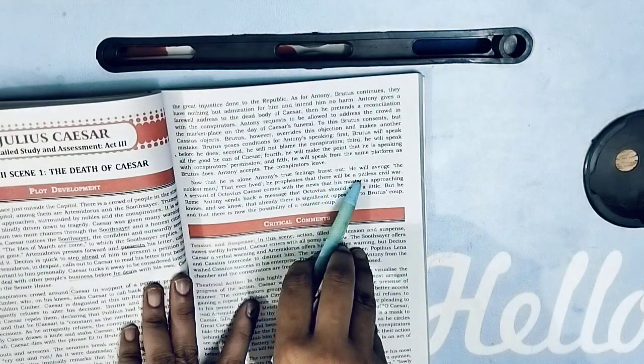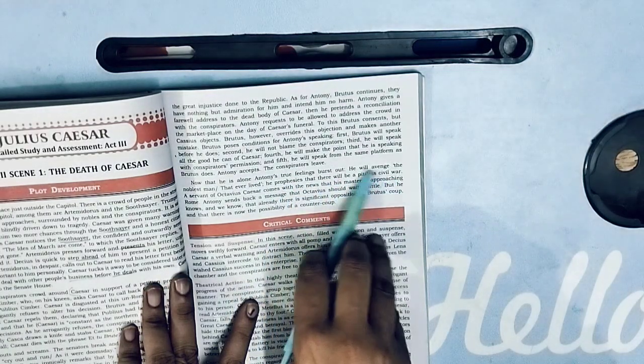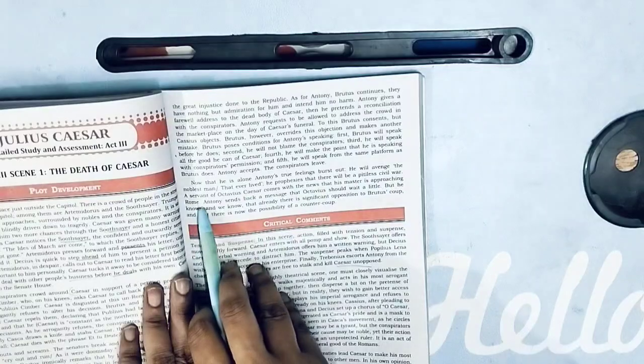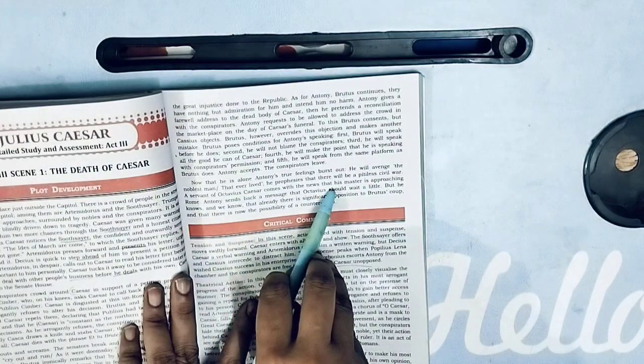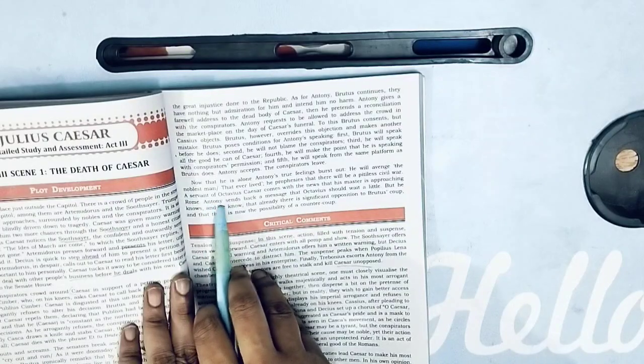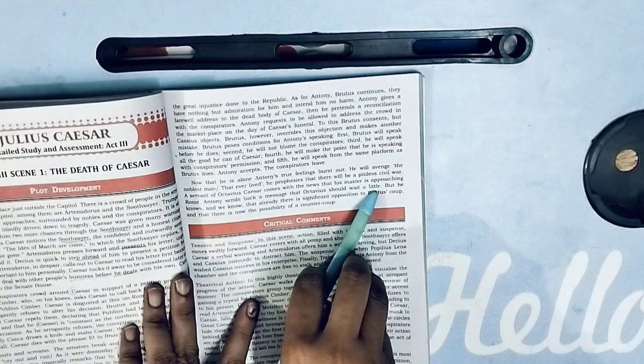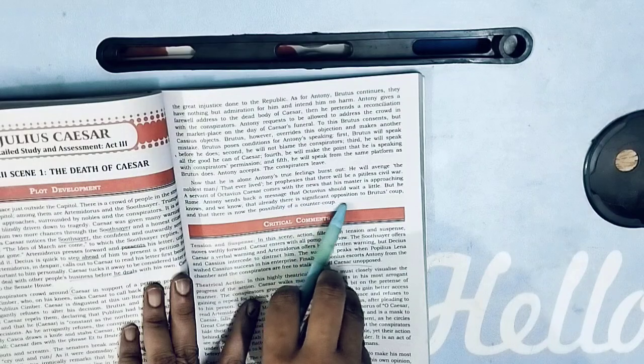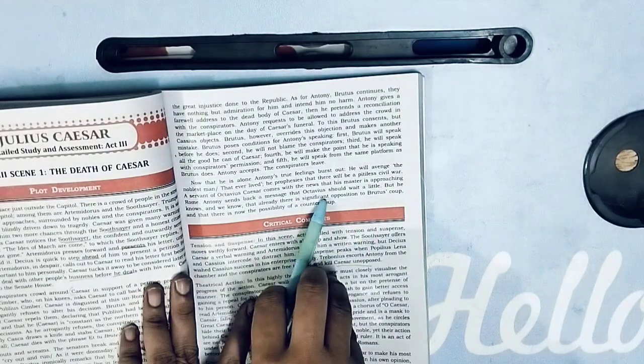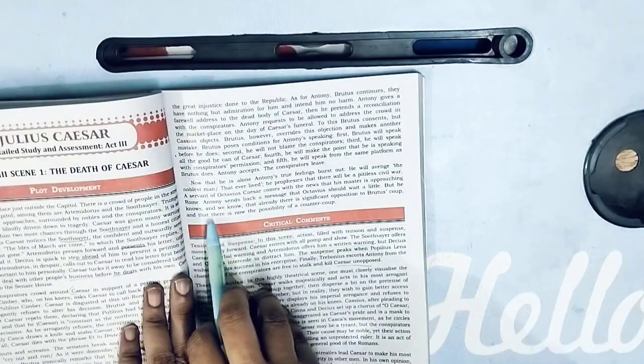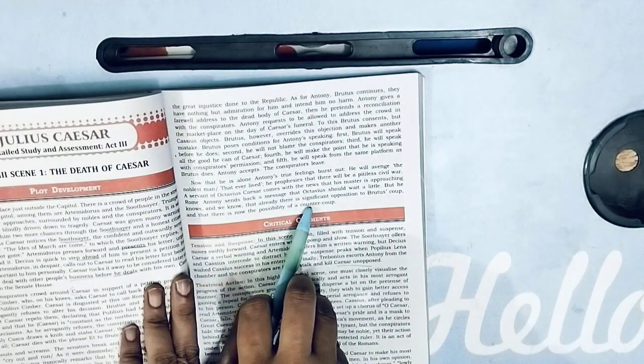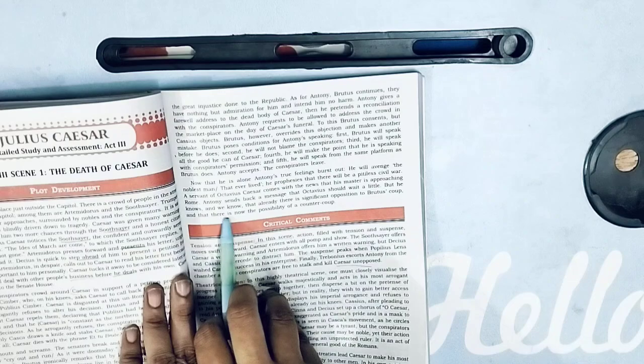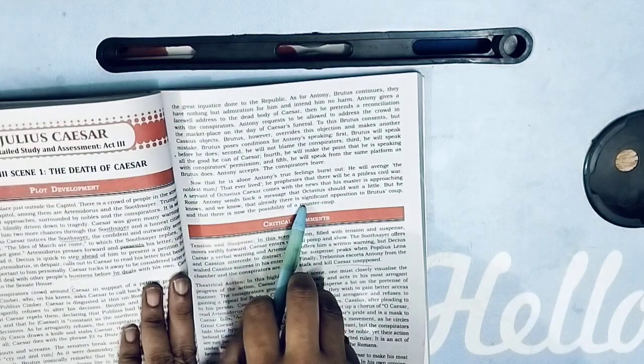He prophesies that there will be a pitiless civil war. A servant of Octavius Caesar comes with the news that his master is approaching Rome. Antony sends back a message that Octavius should wait a little. But he knows and we know that already there is significant opposition to Brutus and that there is now the possibility of a counter coup.